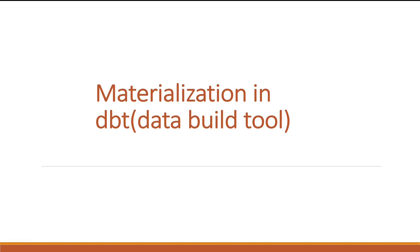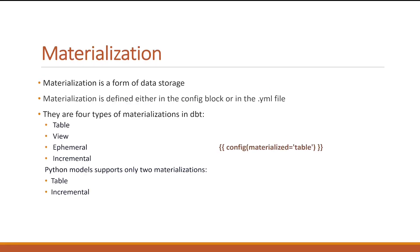In this lecture I'll discuss materialization in dbt. Materialization is a form of data storage. In dbt we have two types of models: SQL model and Python model. In SQL model we store simple SQL statements, whereas in Python model we store Python code. When we deploy these models, objects will be created in the data warehouse — if materialization is defined as a table, a table will be deployed; if defined as a view, a view will be deployed; if defined as ephemeral, nothing will be deployed; and for incremental models, a table will be deployed.